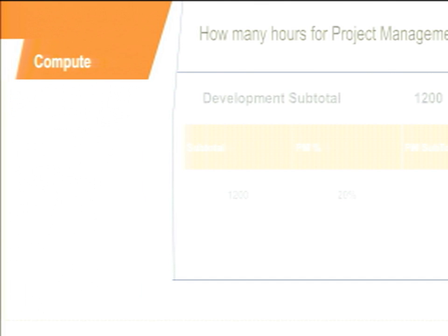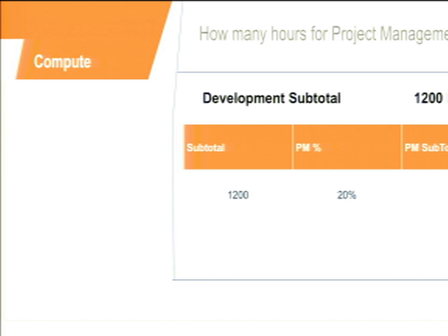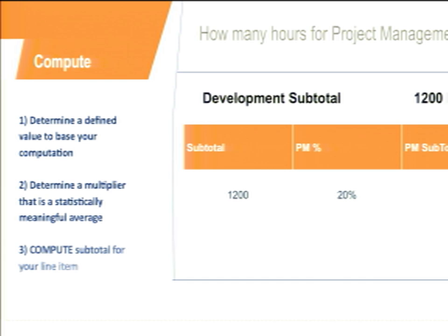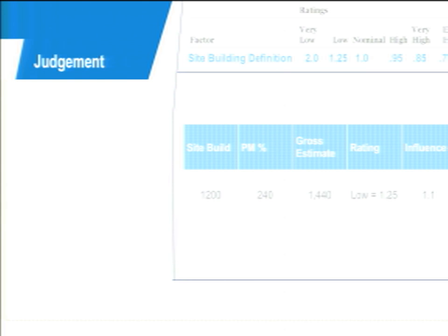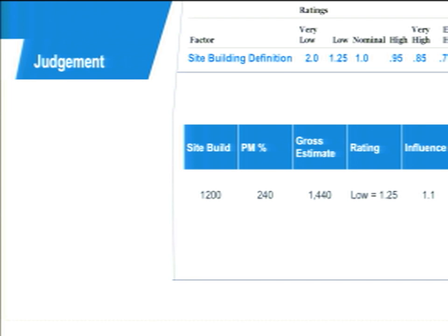For computation: if you've estimated 1,200 development hours, you can apply a percentage factor — like assigning a percentage of the total project to project management. That percentage can also be a calibration if you're pulling it from historical data on how much PM or QA typically consumes. Judgment is where you place your risk factors — maybe assigning a multiplier to a line item you're uncertain about, to scale it up or down accordingly.